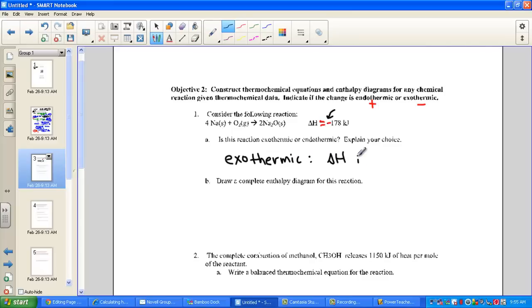Since the delta H is negative, we know that heat is being released from the system. In terms of an enthalpy diagram, we simply want to show on a set of axes the reactants and products separated by their heat content.